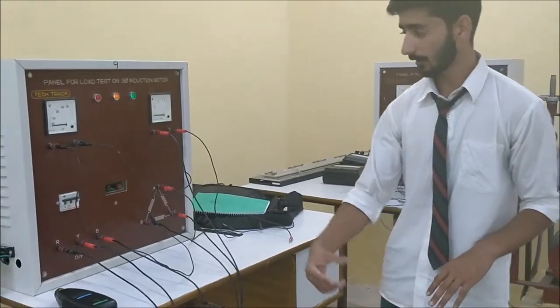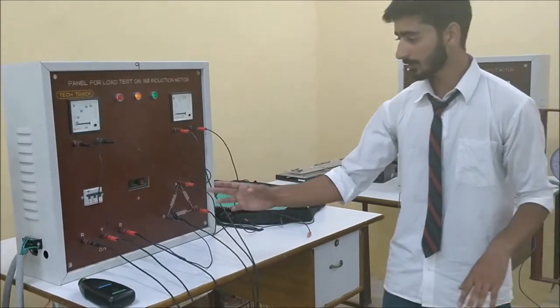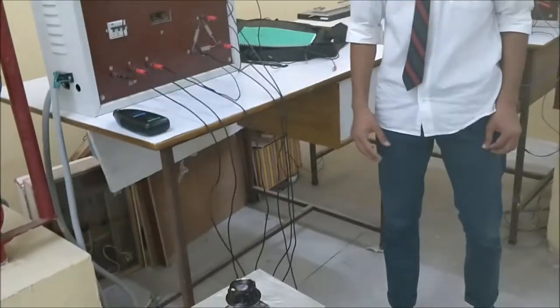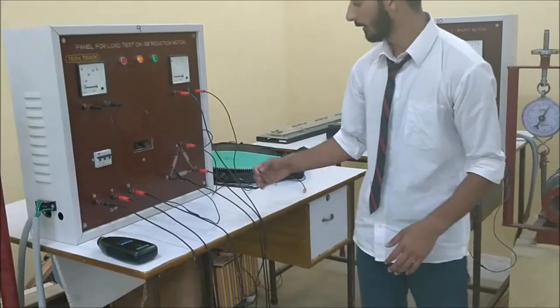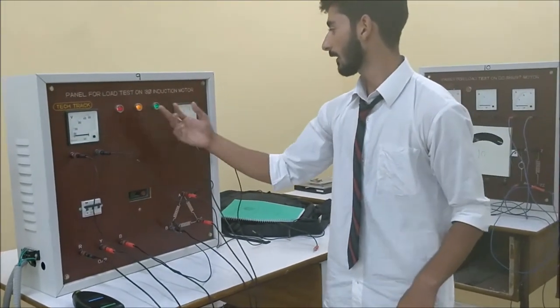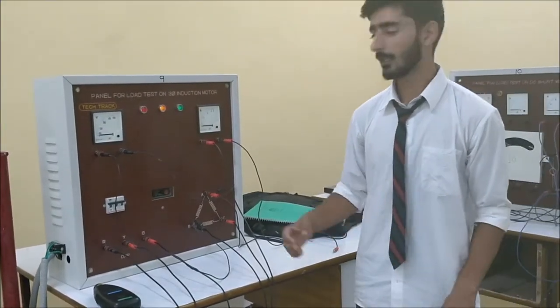Coming directly to the practical experiment, the connection we have made is RYB connected to the input of the auto-transformer, and the output is connected in delta connection. We have two meters here: voltmeter and ammeter, that measure the voltage and current respectively.